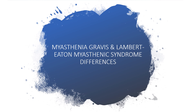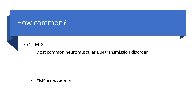Sit back. Let's go through the myasthenia gravis and Lambert-Eaton myasthenic syndrome differences right now. The first question to consider is how common each condition is. Myasthenia gravis is the most common neuromuscular junction transmission disorder, while Lambert-Eaton myasthenic syndrome is very uncommon.